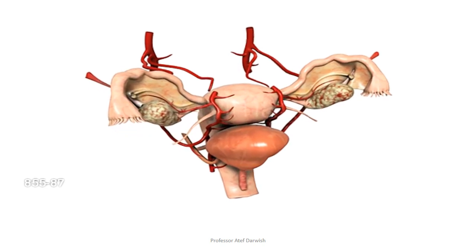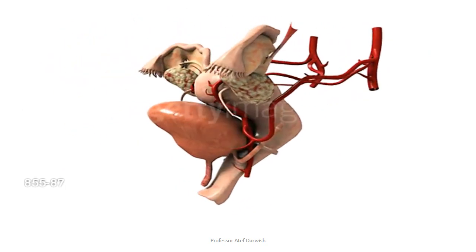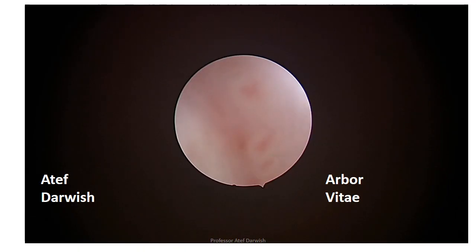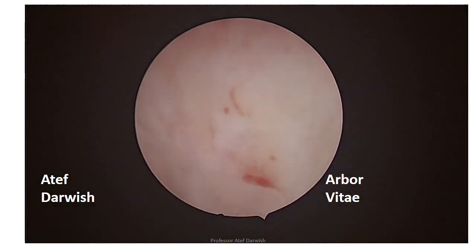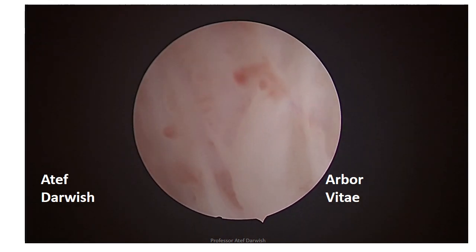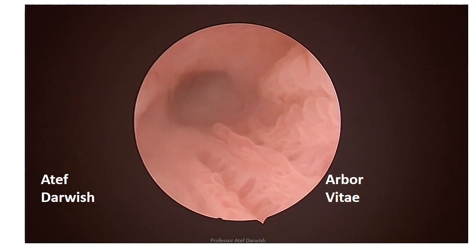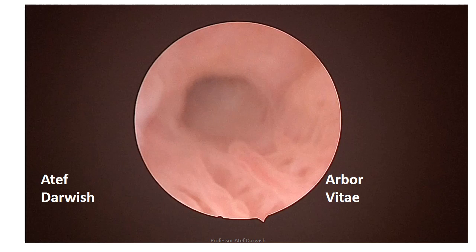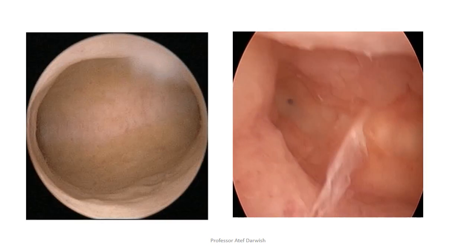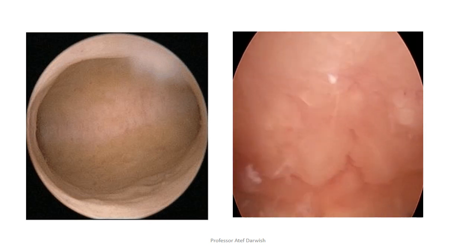We know that the best access to the fallopian tube is done via laparoscopy, as the fallopian tube is entirely seen by laparoscopic examination. But when you are doing hysteroscopy, you start by examination of the cervical canal and comment on normal findings — like the crypts seen here in this video, which are the storage place for sperms — and any abnormality inside the cervical canal should be commented on. Thereafter you go inside the endometrial cavity and comment on the internal os, the fundus, anterior and posterior uterine walls, lateral uterine walls, and cornual ends.